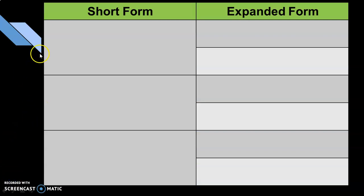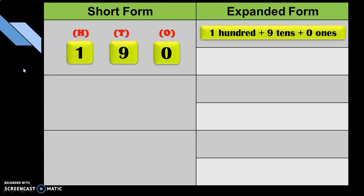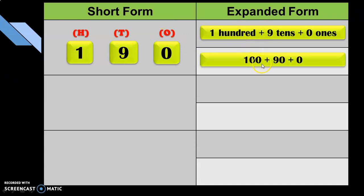Now let us move on to the short form and expanded form type of questions. You could give a three-digit number in the short form: 1 in the 100s place, 9 in the 10s place, and 0 in the 1s place. The question is to write the two types of expanded form. One way is: 1 hundred + 9 tens + 0 ones. The other way is: 100 + 90 + 0.